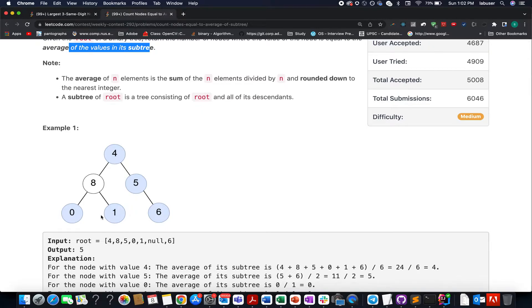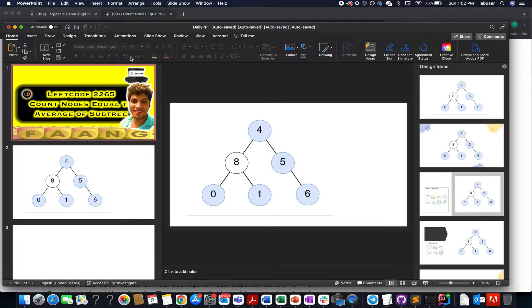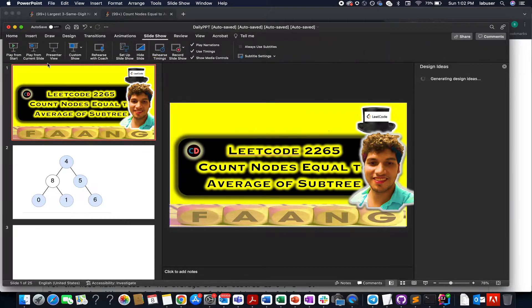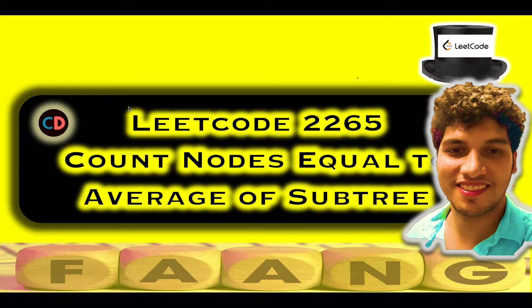LeetCode 2265 is a medium level question on LeetCode — Count Nodes Equal to the Average of Subtree. If you have any questions or any difficulty understanding this problem, please feel free to join the Telegram group or the Discord server of Coding Decoded. I'll be more than happy to answer all your queries.